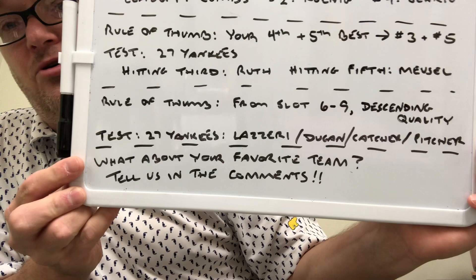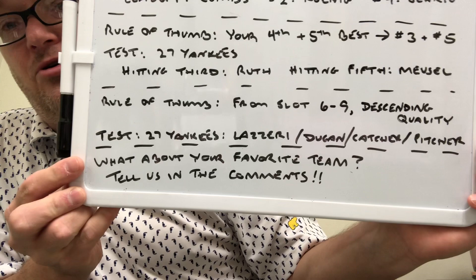At the bottom here, I'm asking you: what about your favorite team? How do they do on this test? Are they following the concepts of the book — top three hitters in spots one, two, and four; fourth and fifth best in the third and fifth spots; and then six, seven, eight, nine with whoever's left? Does your team do that? Tell me in the comments below.